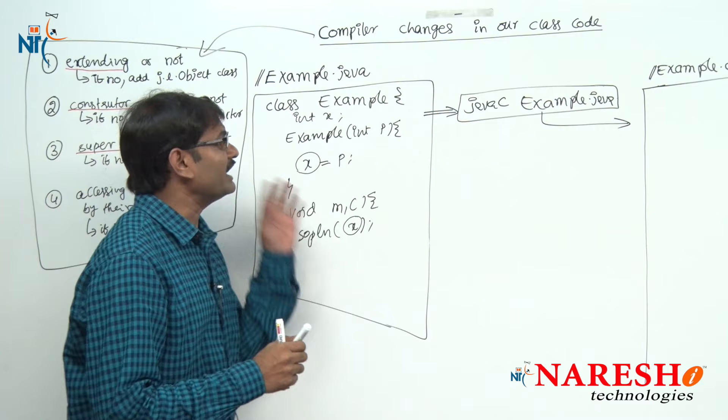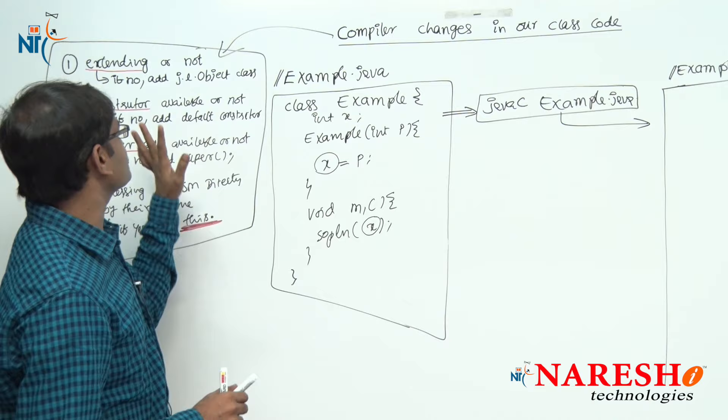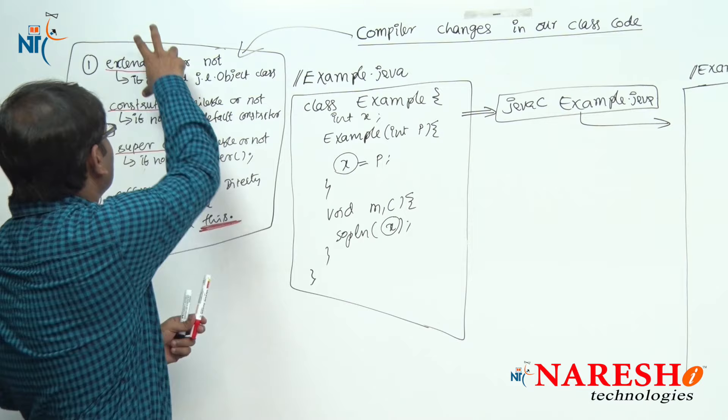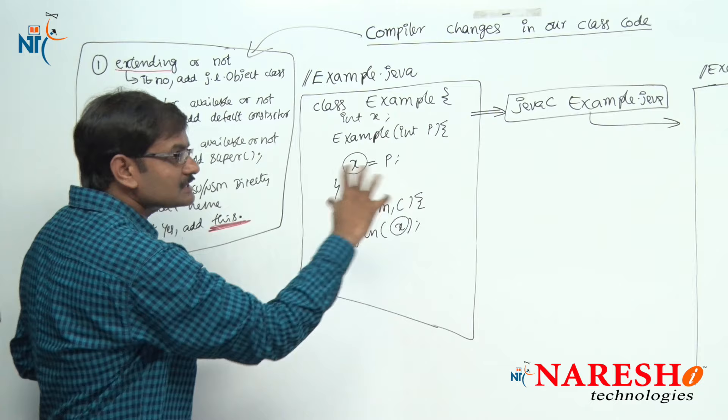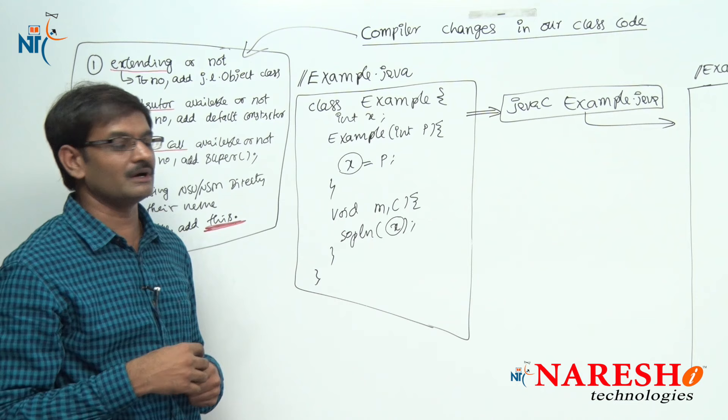Why is it doing these four changes? Let us try to understand one by one. First let us see some test cases. I will give you some programs — just follow these four points and try to develop the dot class file. If you know how to develop the dot class file with these changes, you can automatically solve the questions I am giving.